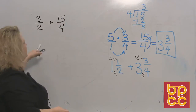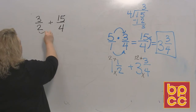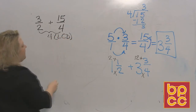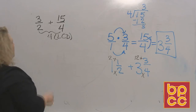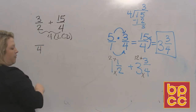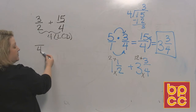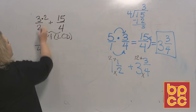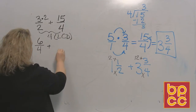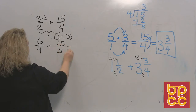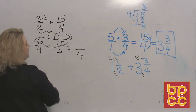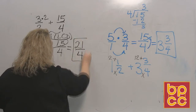Now we need a common denominator. The LCD between two and four is four. Changing three-halves to something over four: two times two gives the four, so multiply the top by two as well — three times two is six, giving six-fourths. The fifteen-fourths already has the denominator we need, so no changes there. Collecting the tops: six plus fifteen equals twenty-one. So we need twenty-one-fourths yards.